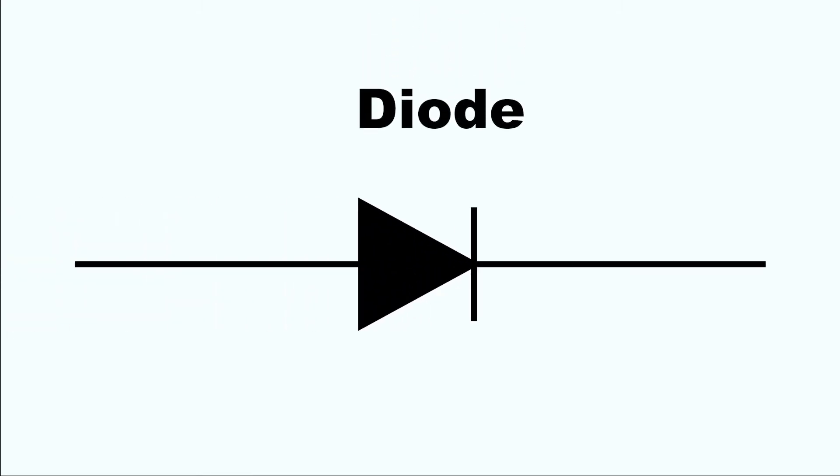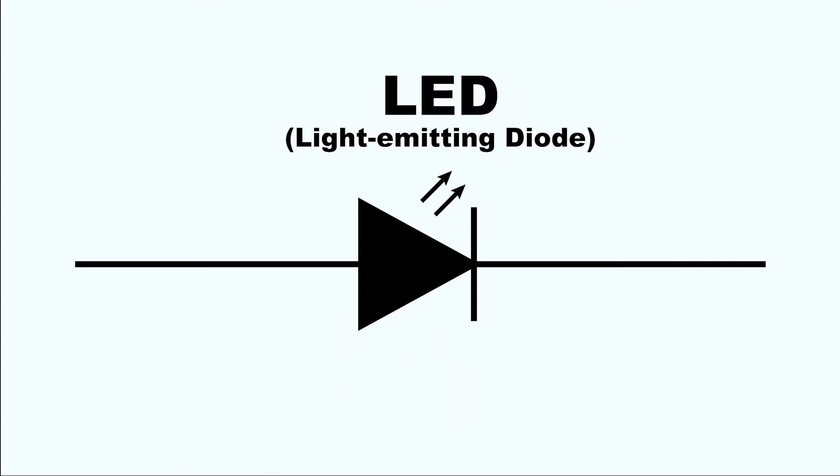If you ever look at a circuit diagram, an LED is represented by a diode symbol, a triangle with a line at the point, with two arrows indicating that it emits light. The lines out the sides represent the leads, positive and negative. The triangle points in the direction that electric current will flow.